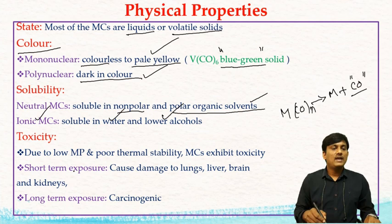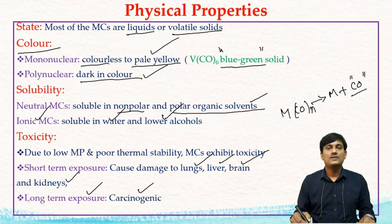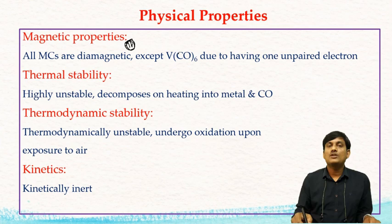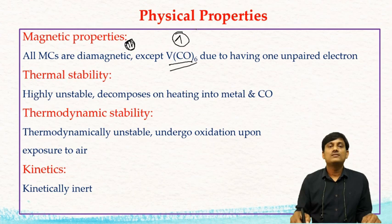When exposed for a short term, metal carbonyls cause damage to the lungs, liver, brain, and kidneys. If exposed for a long time, they are carcinogenic in nature. Regarding magnetic properties, all metal carbonyls are diamagnetic since all electrons are paired. There is an exception: V(CO)₆ has one unpaired electron, and due to this unpaired electron, V(CO)₆ is paramagnetic.